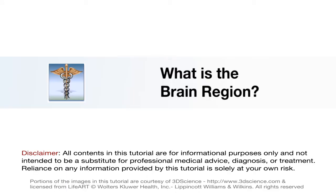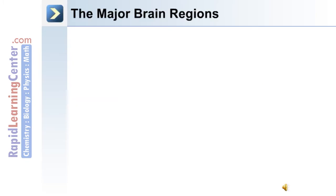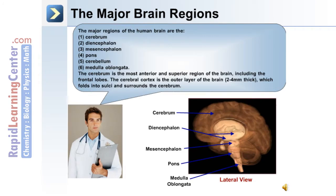We will now move on to discuss the different brain regions shown in this lateral view image. The major brain regions are: number one, the cerebrum; number two, the diencephalon; number three, the mesencephalon; number four, the pons; number five, the cerebellum; and number six, the medulla oblongata.